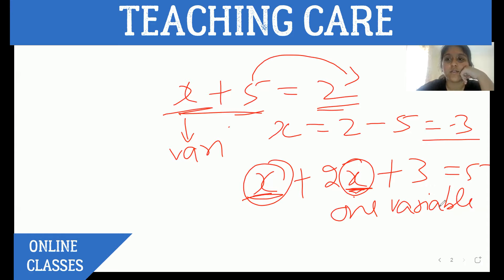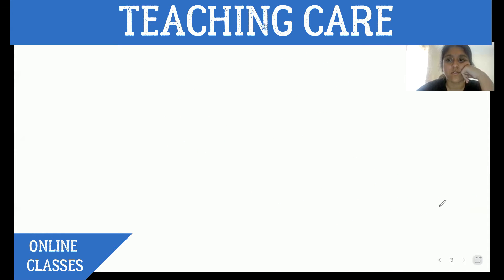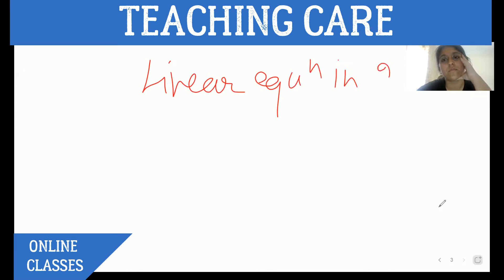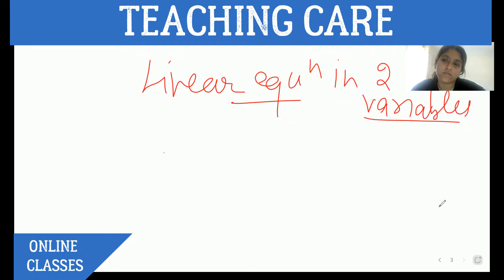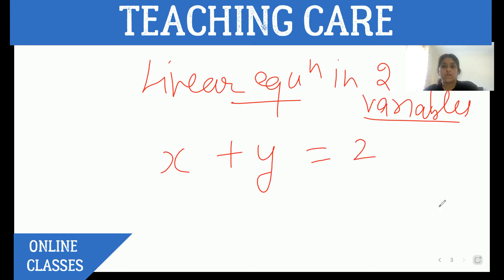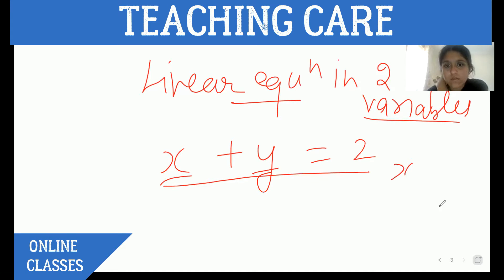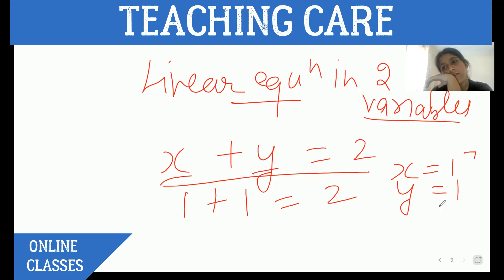Now we are taking it to the next level — linear equations in two variables. In a linear equation in two variables, like x plus y equals 2, two variables x and y are there. They may have the same value or different values. For example, one possibility is x equals 1 and y equals 1, giving 1 plus 1 equals 2.